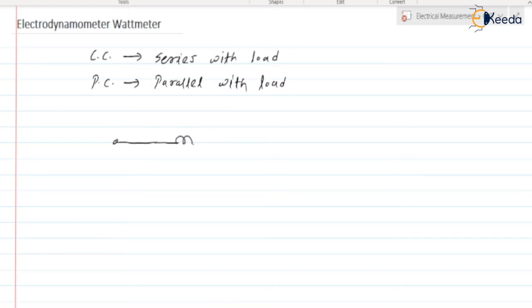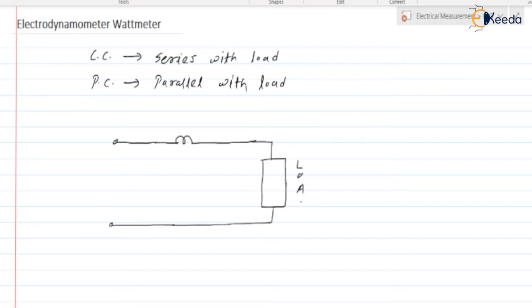Here we have a current coil connected in series with a load. Consider the load current is I and the current flowing through the current coil is I1. The potential coil is connected in parallel. The potential coil has a greater number of turns compared to the current coil and has higher resistance.